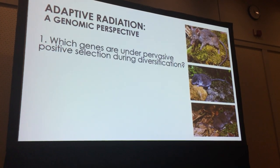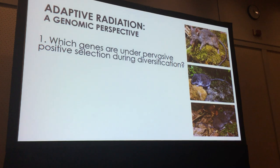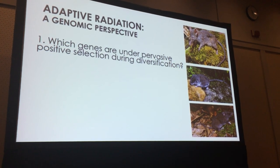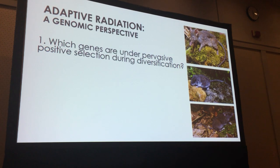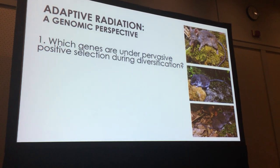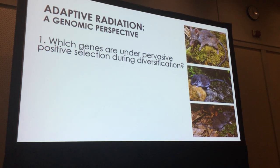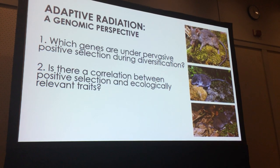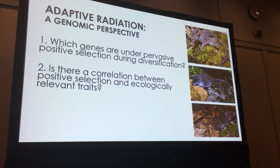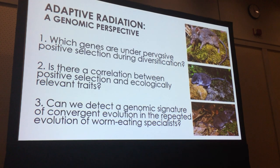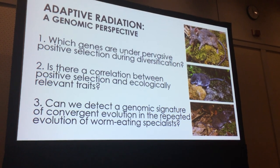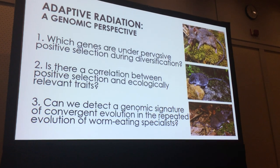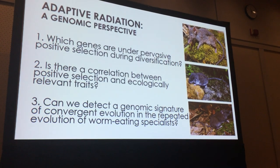There are three questions I want to cover today, thinking about adaptive radiation from a genomic perspective. The first is: which genes are under pervasive positive selection during the diversification process? The second is whether there's a correlation between positive selection and ecologically relevant traits. And whether we can detect a convergent genomic signature for convergent evolution in the repeated evolution of the worm-eating specialist species.